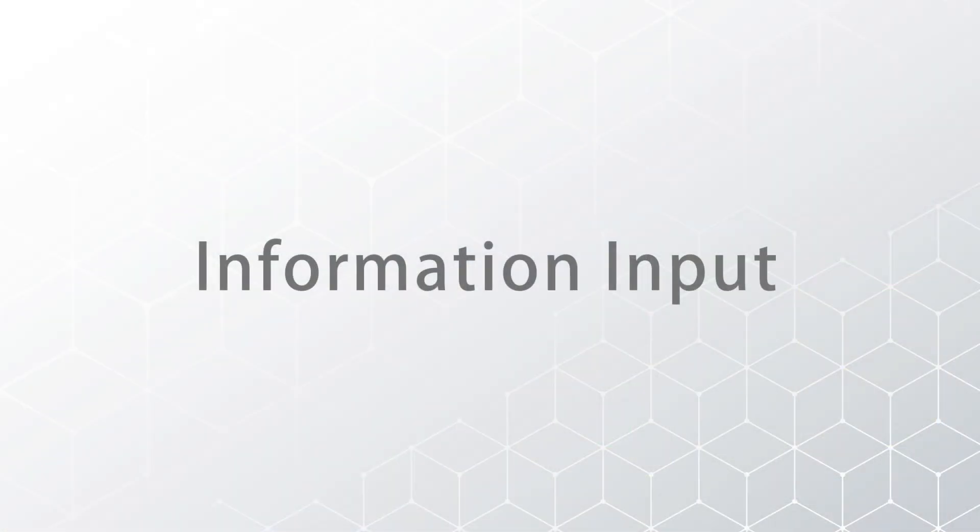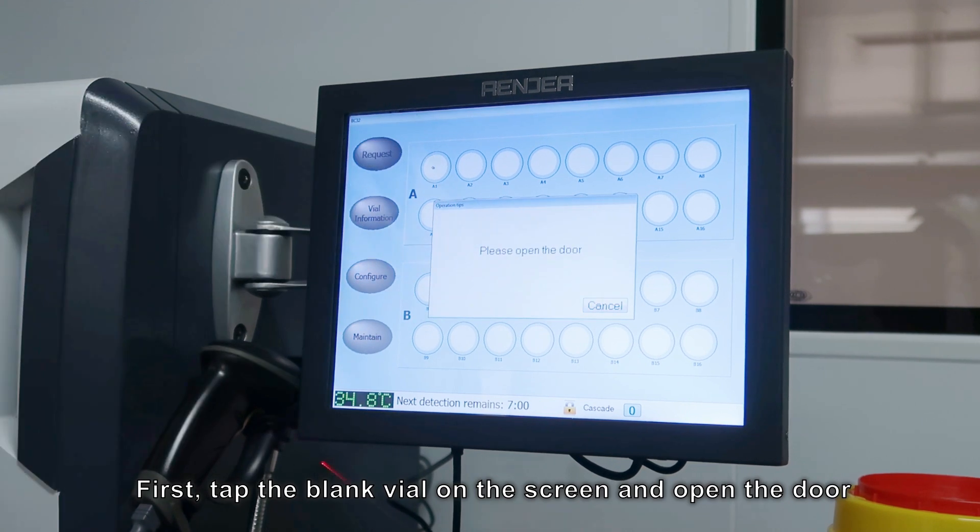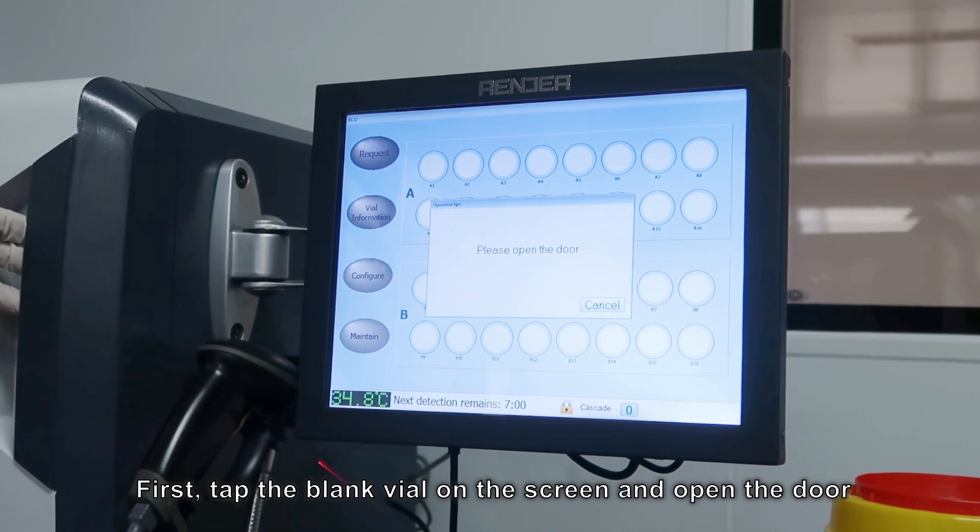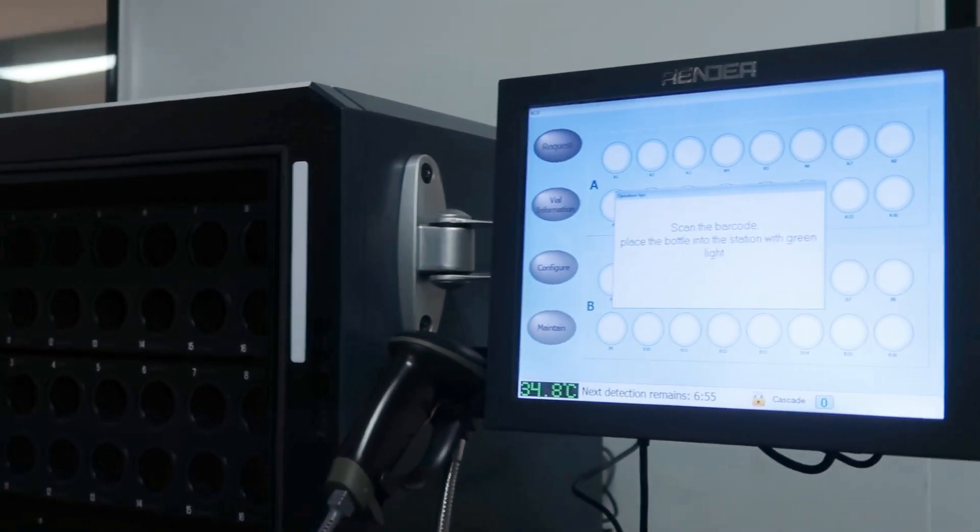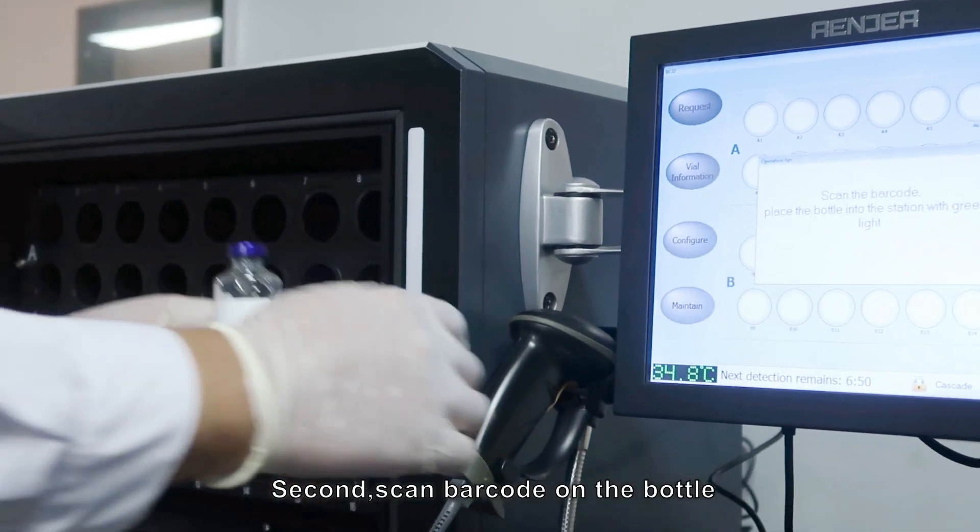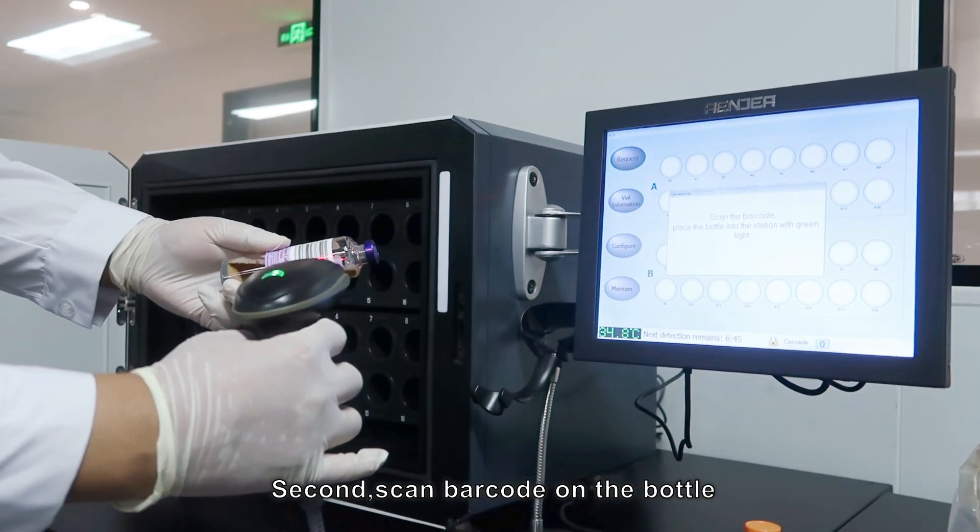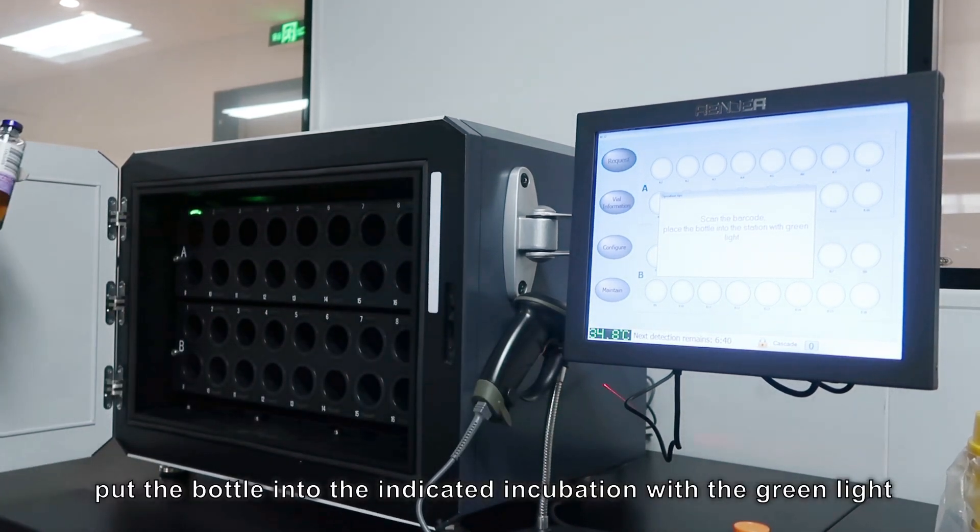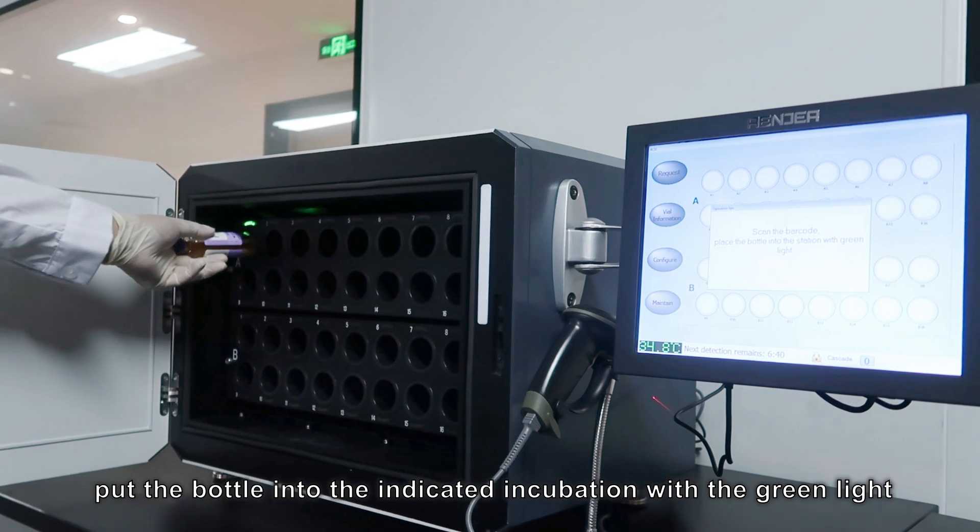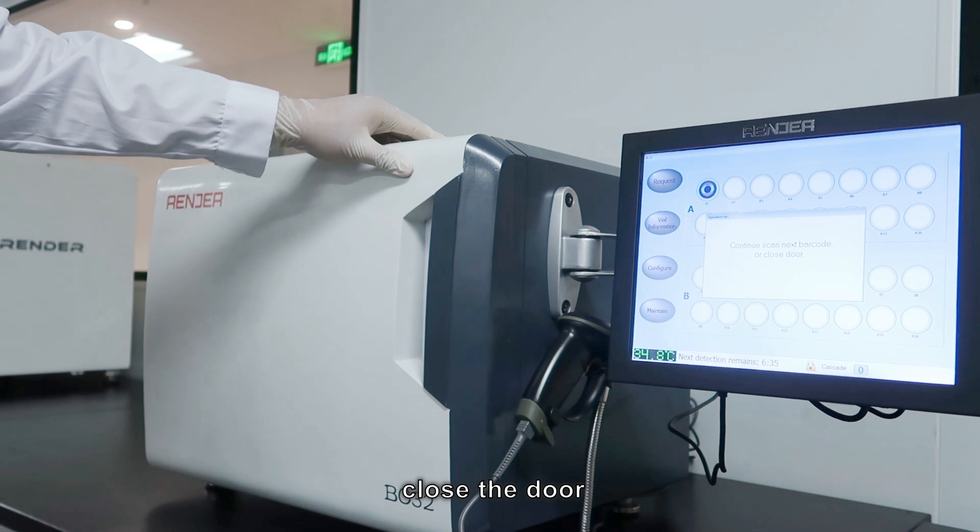Second, information input. First, click the blank area on the screen and open the door. Second, scan barcode on the bottle. Put the bottle into the indicated incubation chamber with the green light. Close the door.